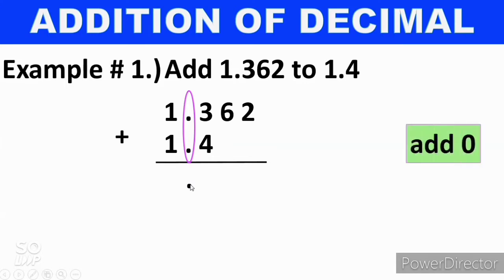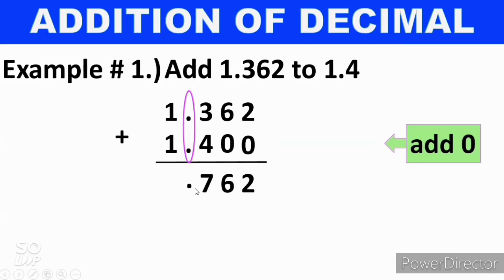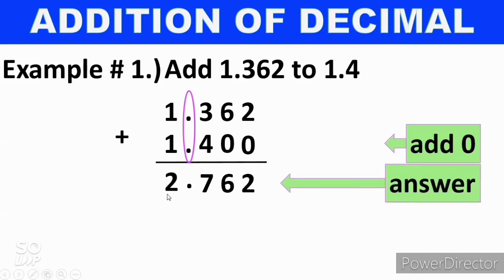The next step is to add 0. We have 1.4, it becomes 1.400. Now 1.362 plus 1.400: 2 plus 0 is 2, 6 plus 0 is 6, 3 plus 4 is 7, and 1 plus 1 equals 2. Therefore, the sum of 1 and 362 thousandths and 1 and 4 tenths is 2.762, or 2 and 762 thousandths.